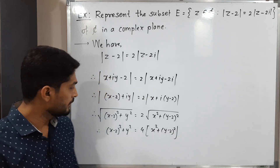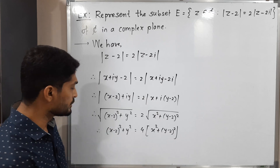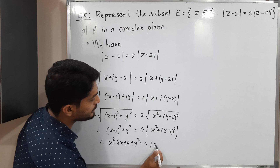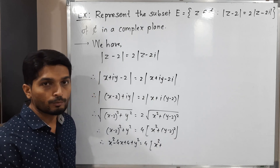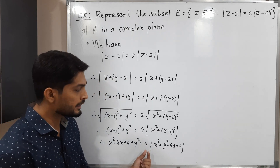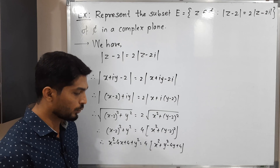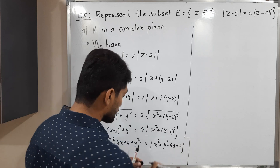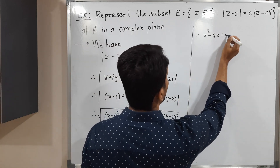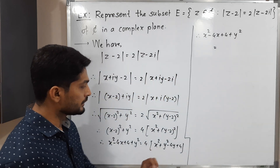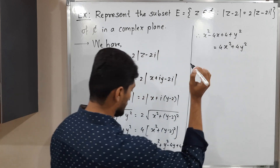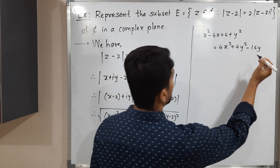Now we need to simplify. Using the A minus B squared formula on (X minus 2) squared, we get X squared minus 4X plus 4, plus Y squared, equals 4 times X squared. Then expanding (Y minus 2) squared gives Y squared minus 4Y plus 4. So multiplying each term by 4, the right side becomes 4X squared plus 4Y squared minus 16Y plus 16.